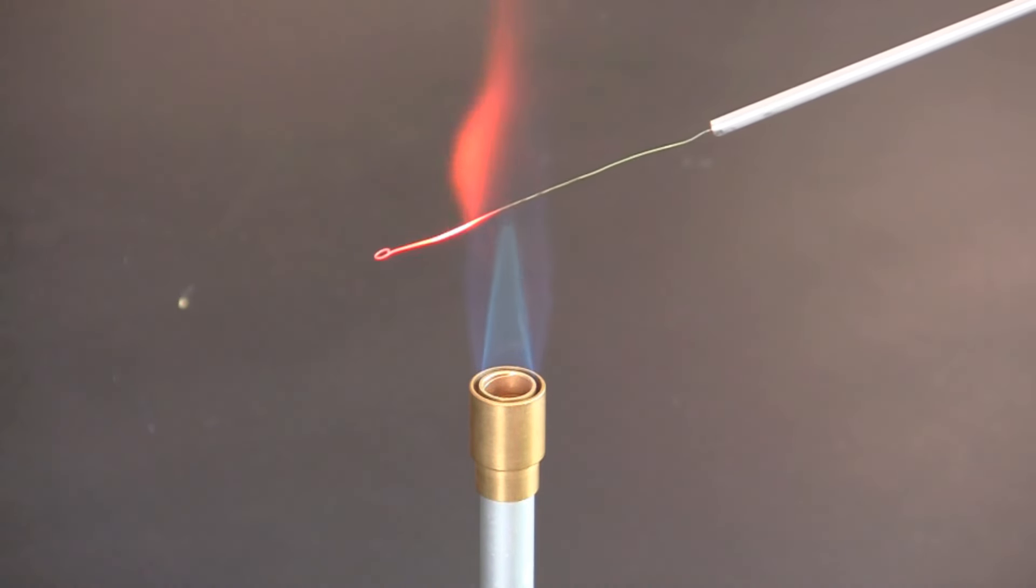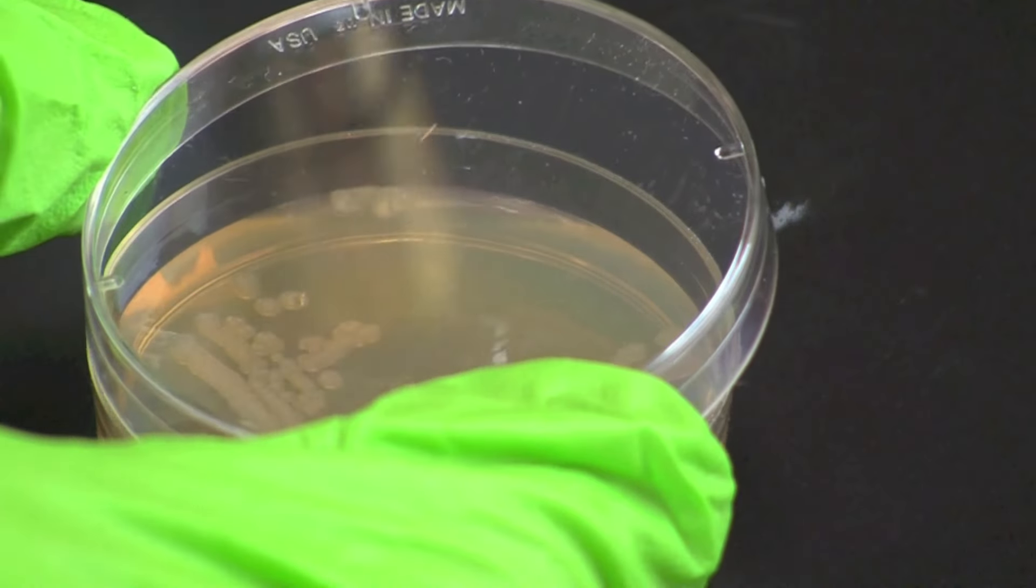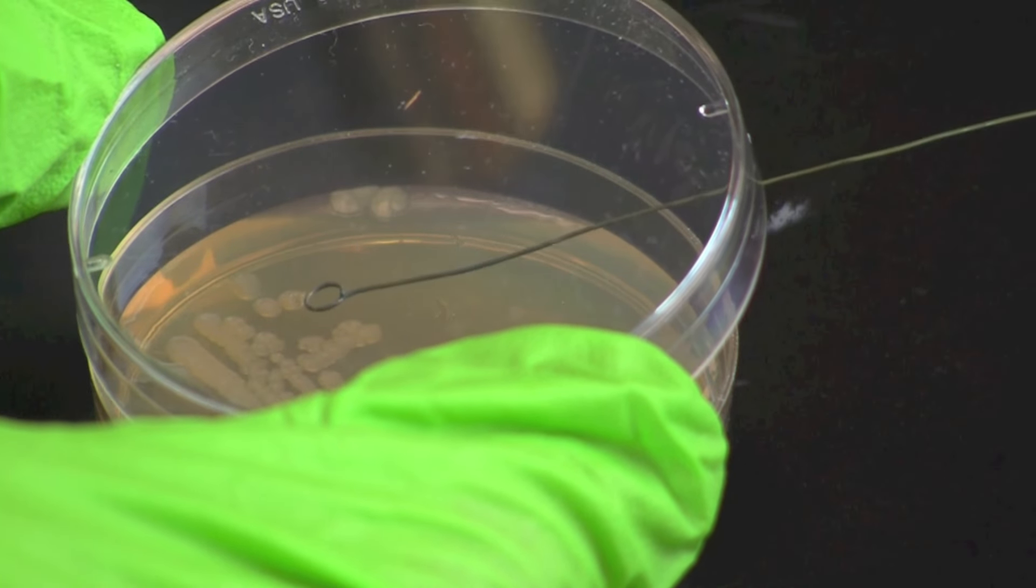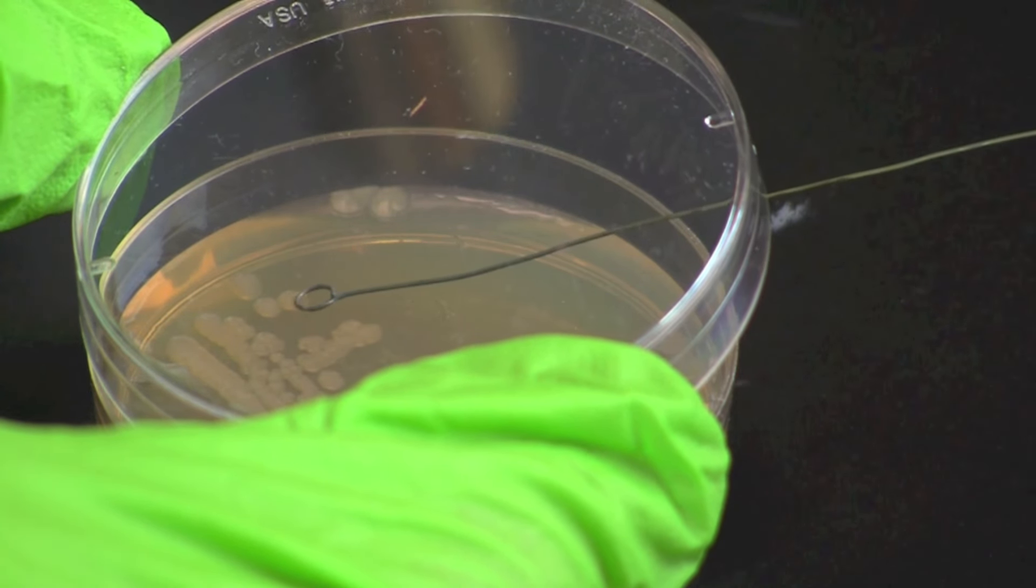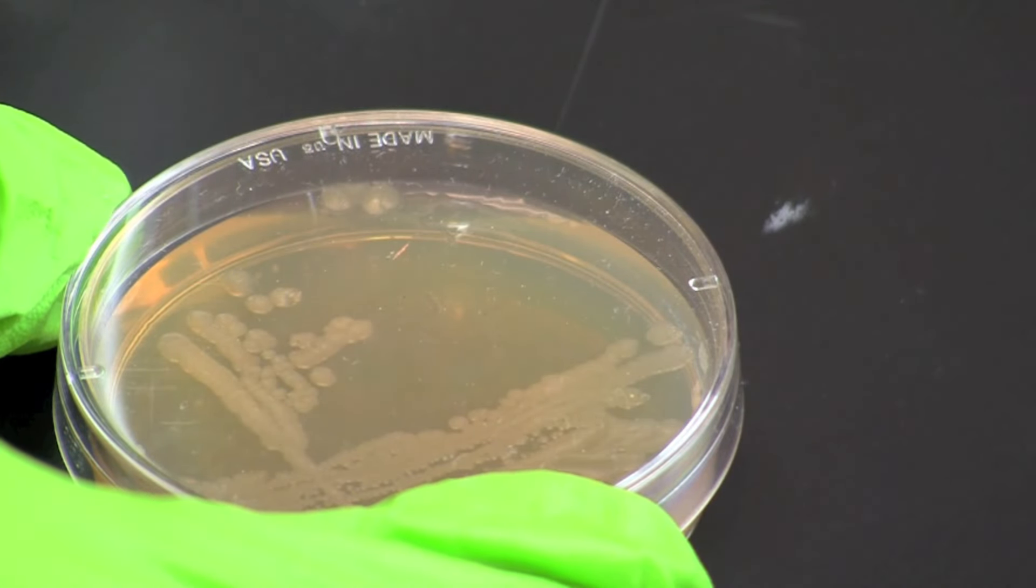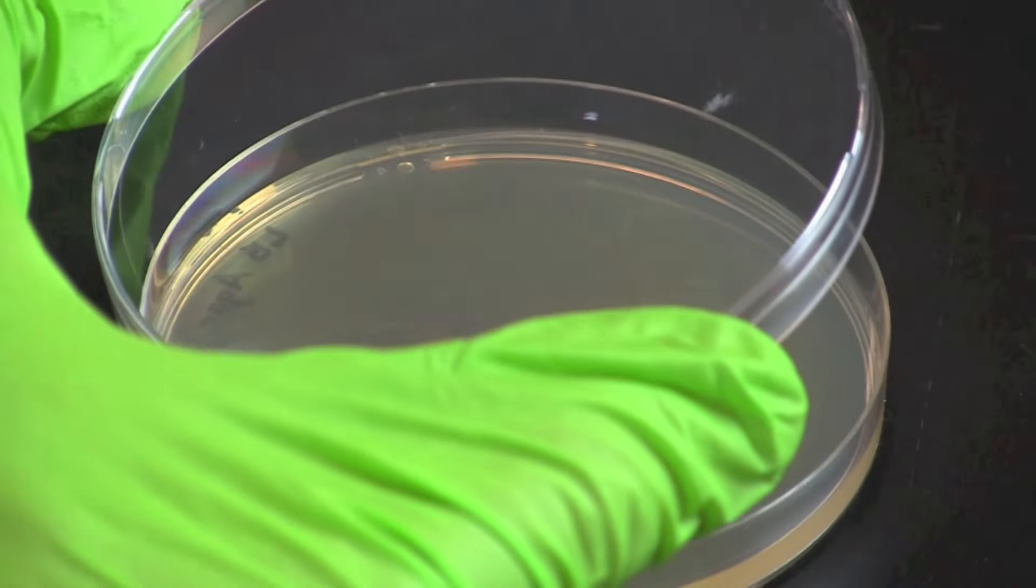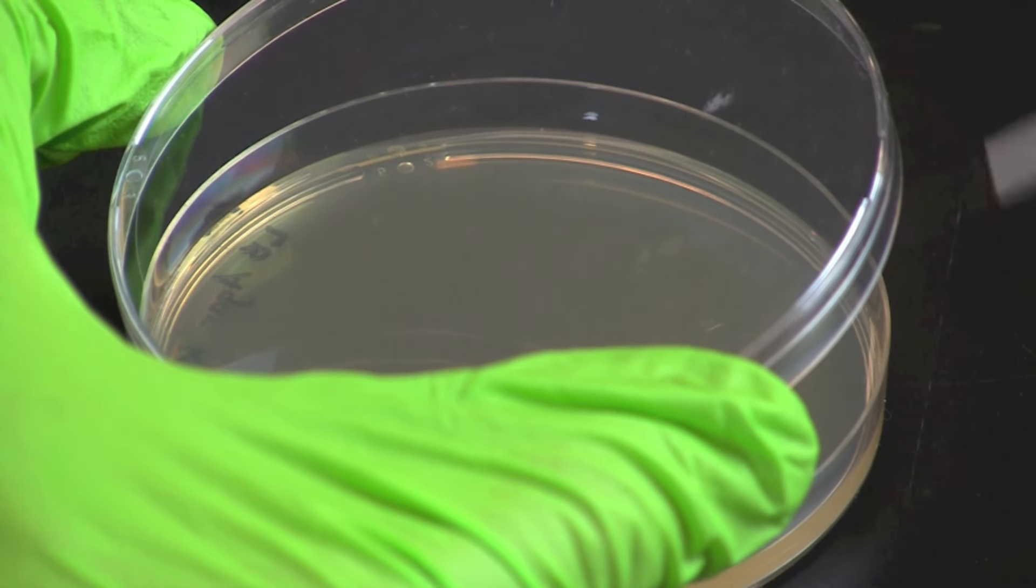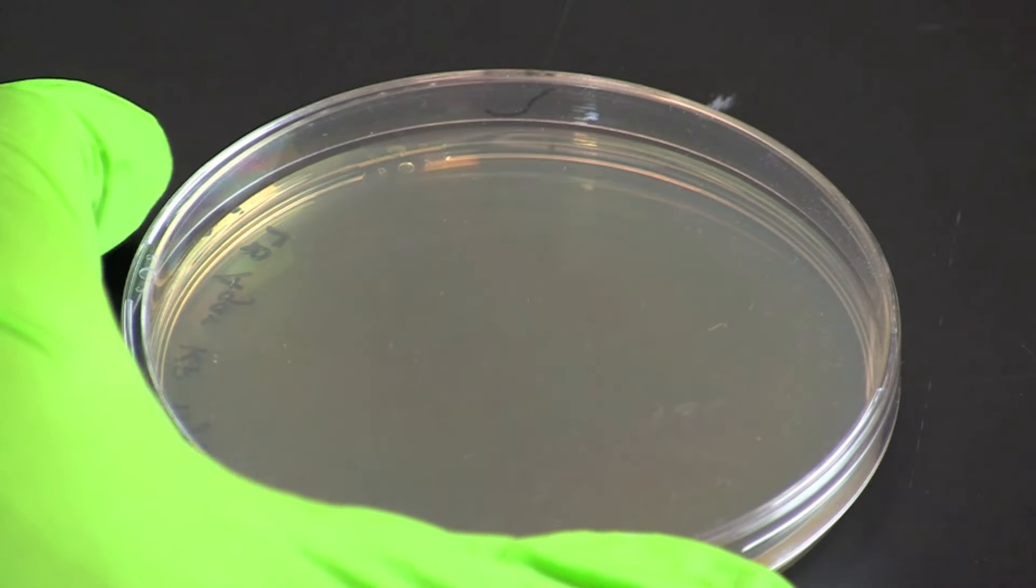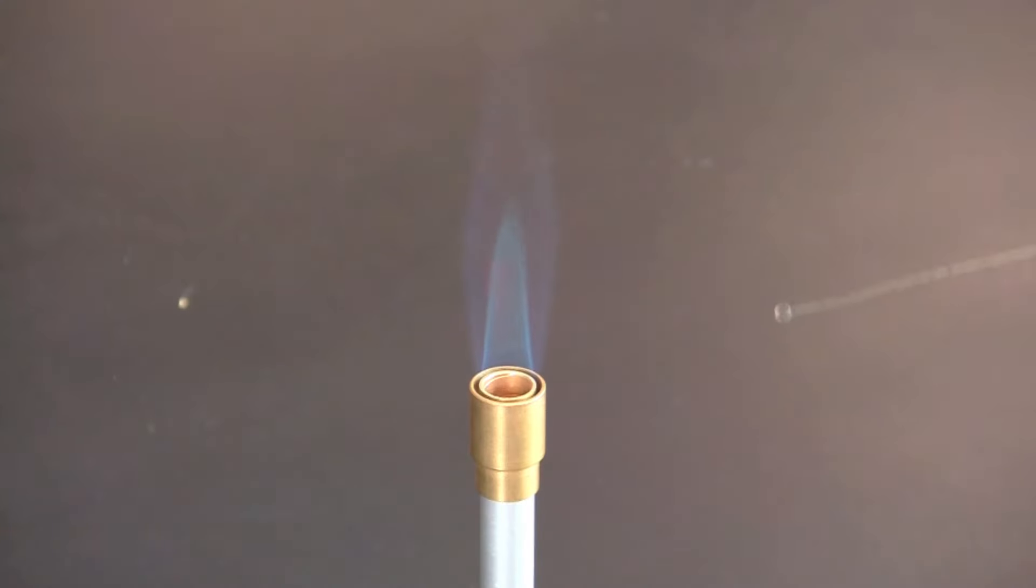Flame an inoculating loop to sterilize and allow it to cool. You can lightly touch the loop on an empty spot on the bacterial plate to make certain the loop is cool. Gently scrape a colony from the surface of the plate so that it collects on the loop. Transfer the bacteria to your LB agar plate and gently rub the loop back and forth across the top left corner of the plate about 10 times. Stay in the top left quadrant of the plate and do not break the surface of the agar.